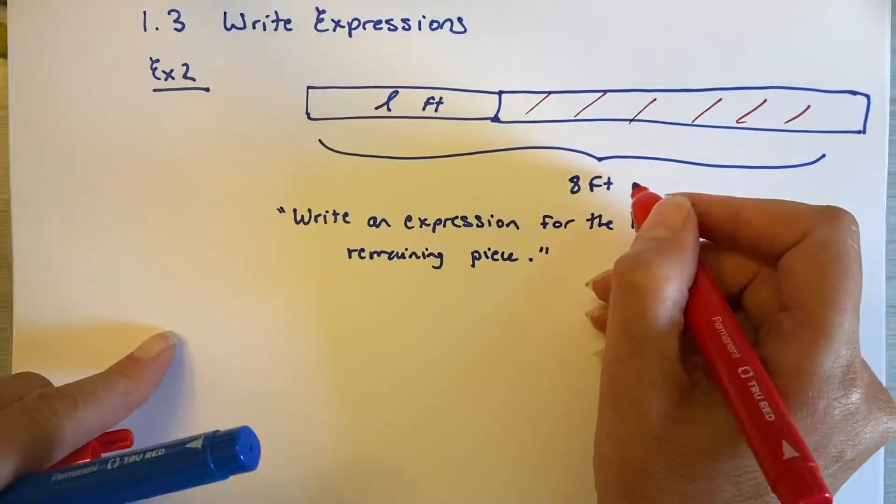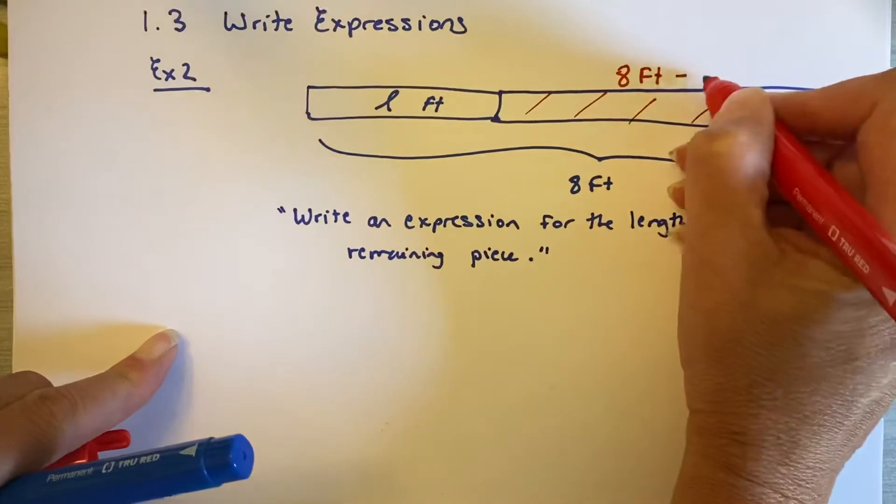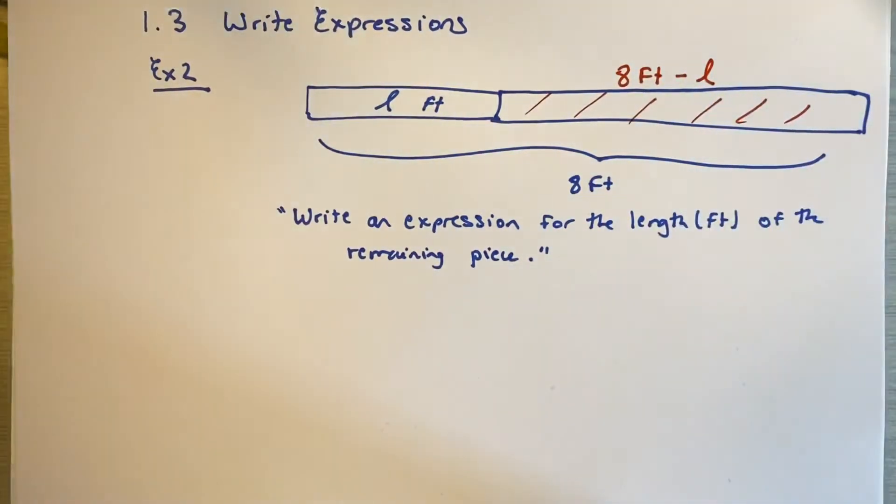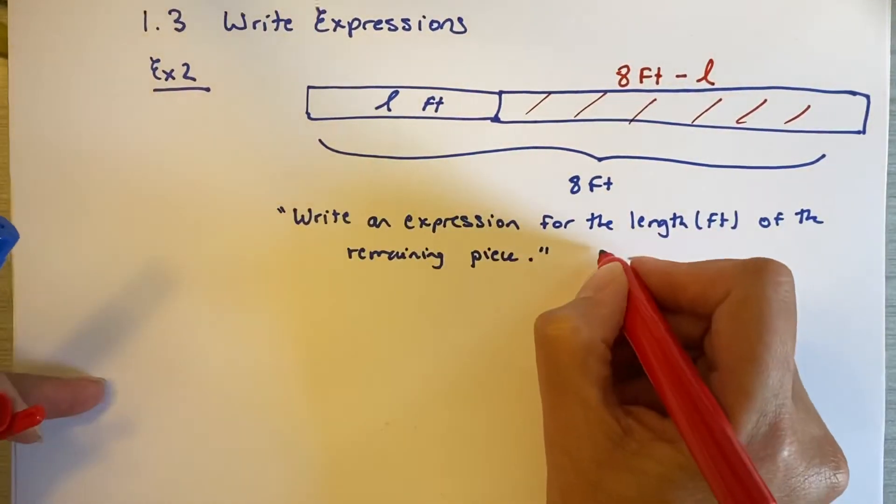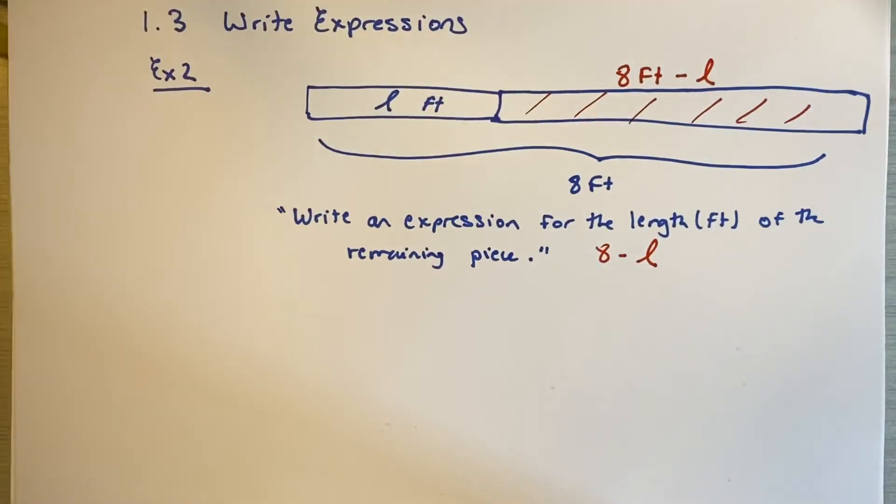This is the length that you want to put as an expression. And we can tell it's eight feet minus L. So the remaining piece you would write is 8 minus L. That is the expression that describes it. And of course, now if they tell you what L is, you'll know exactly what the remaining piece is.